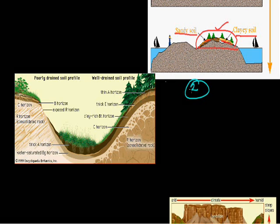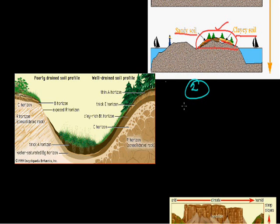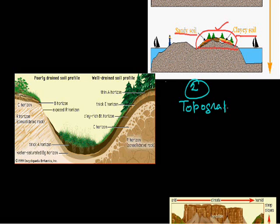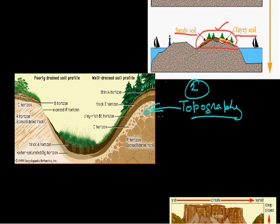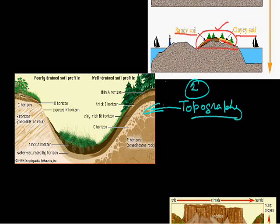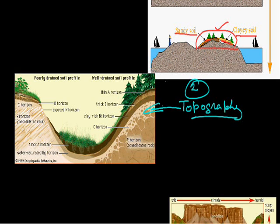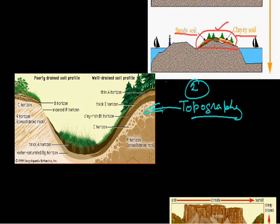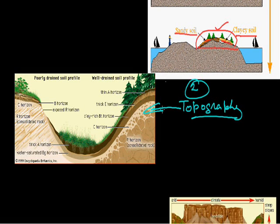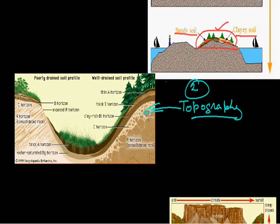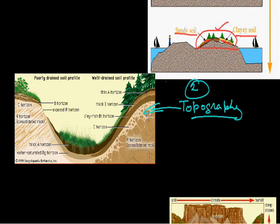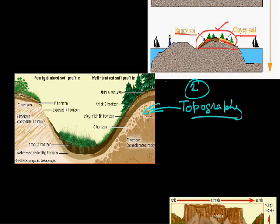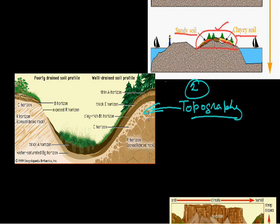The second factor is topography. Topography, like parent material, is another important factor controlling soil formation. The influence of topography is felt through the amount of exposure of the surface covered by the parent material to sunlight, and the amount of surface and subsurface drainage over and through the parent material.